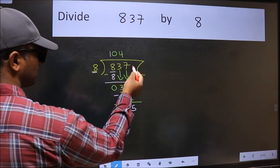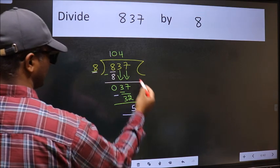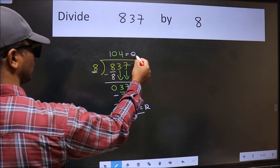No more numbers to bring down. So we stop here. This is our remainder and this is our quotient.